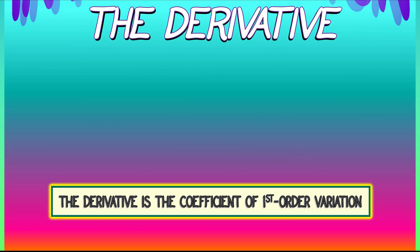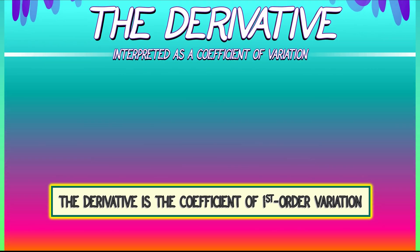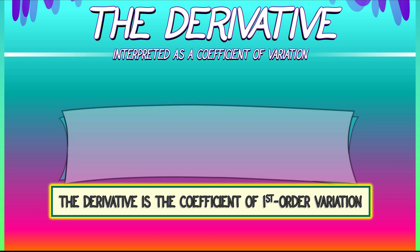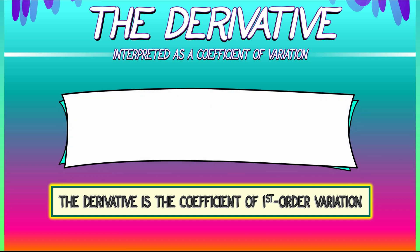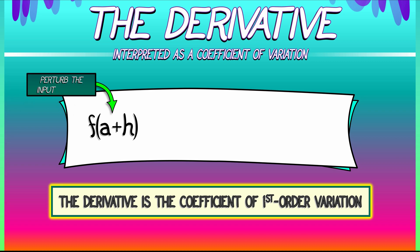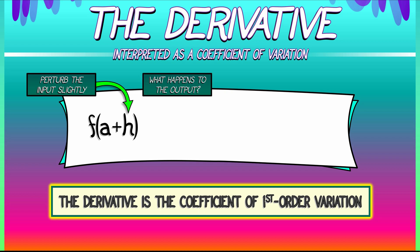We're going to think about the derivative in terms of variation of the output. You've got some function f and an input a. Consider f of a plus h. We're going to perturb away from that input slightly by a small amount h. And the question is, what happens to the output? Well, if h were zero, the output would just be f of a.